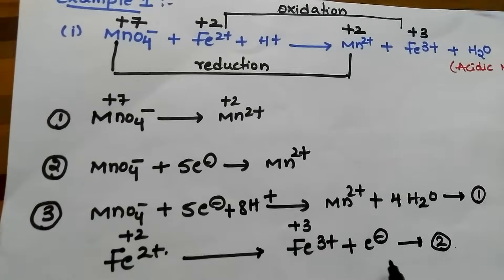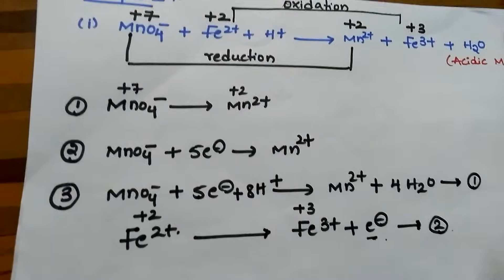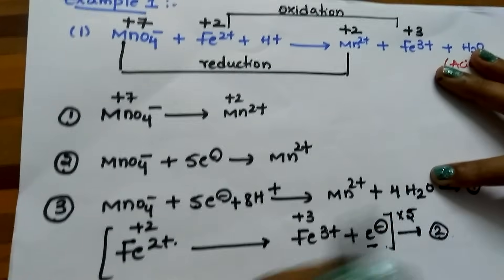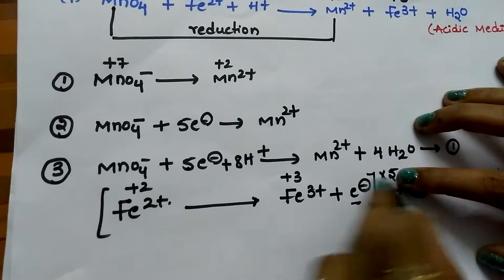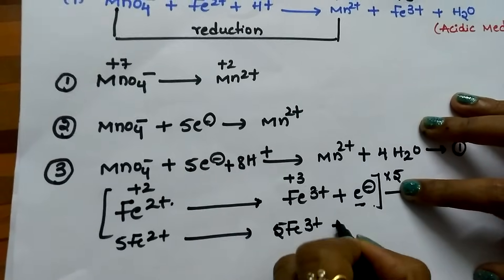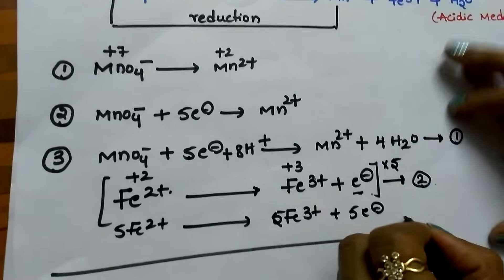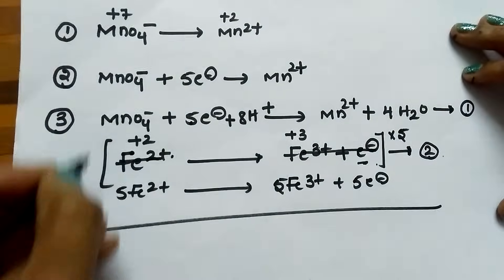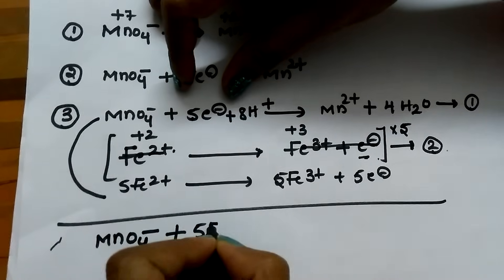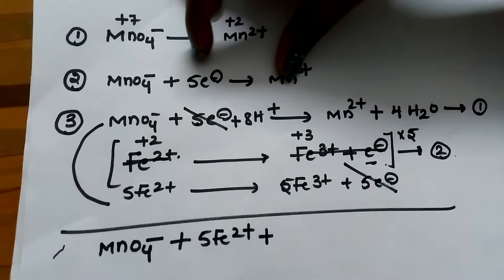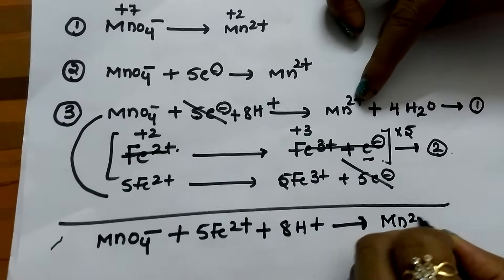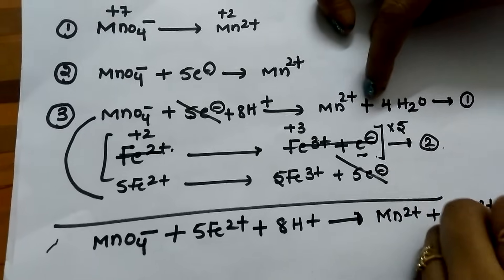For balancing the number of electrons, multiply equation 1 by 1 and equation 2 by 5 — we are equating the electrons in these two reactions. Multiplying gives: 5 Fe²⁺ → 5 Fe³⁺ + 5 electrons. Now add the two equations. MnO₄⁻ + 5 Fe²⁺ + 8 H⁺ ions — the 5 electrons cancel — gives Mn²⁺ + 5 Fe³⁺ + 4 H₂O. This is the balanced equation.